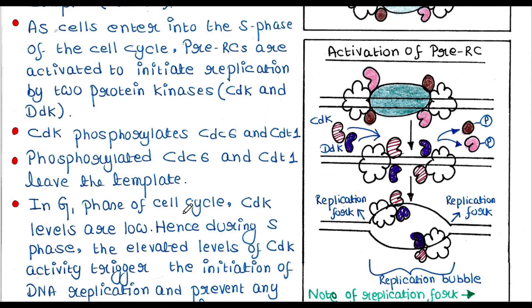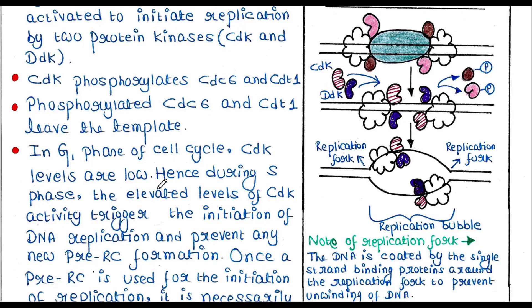In G1 phase of the cell cycle, CDK levels are low. Hence during S phase, the elevated levels of CDK activity trigger the initiation of DNA replication and prevent any new pre-RC formation. So DNA replication is only possible in S phase because in G1 phase, CDK levels are low.